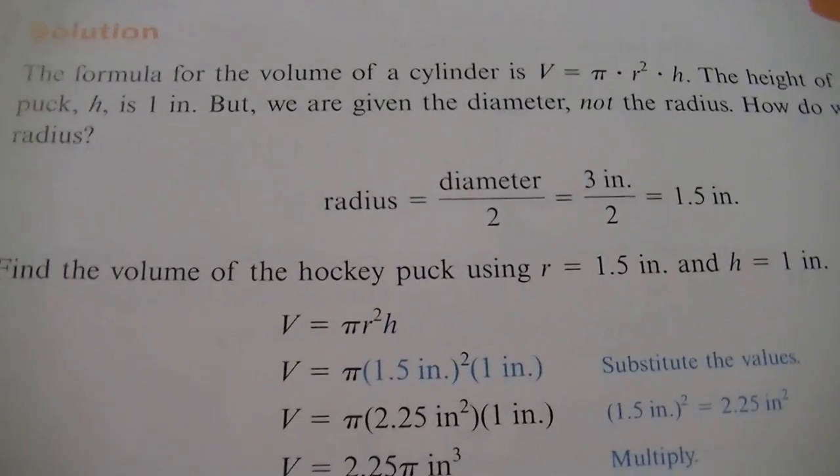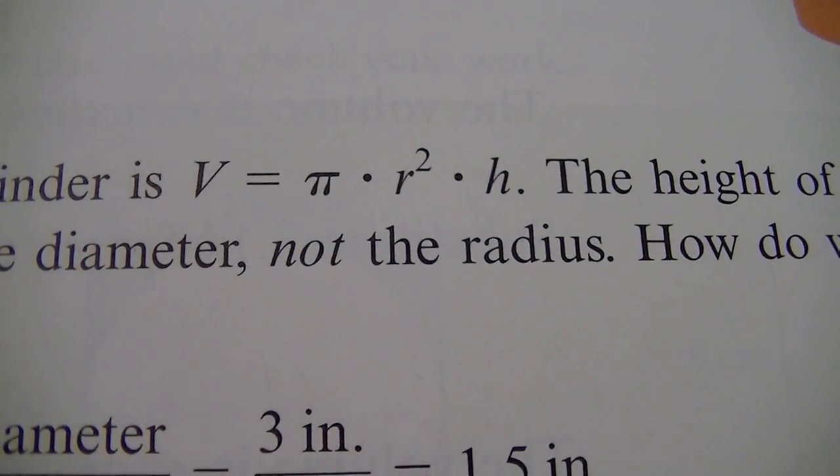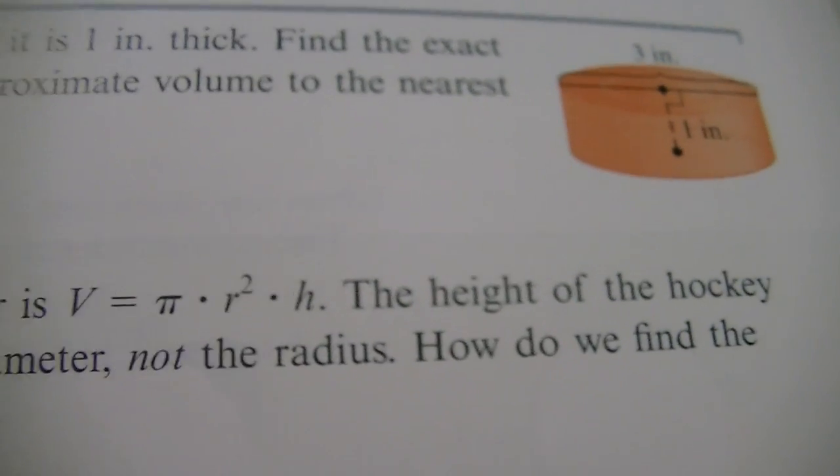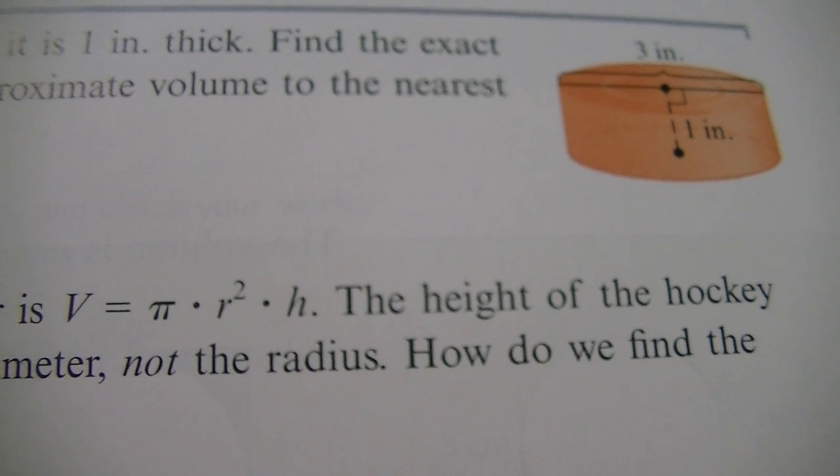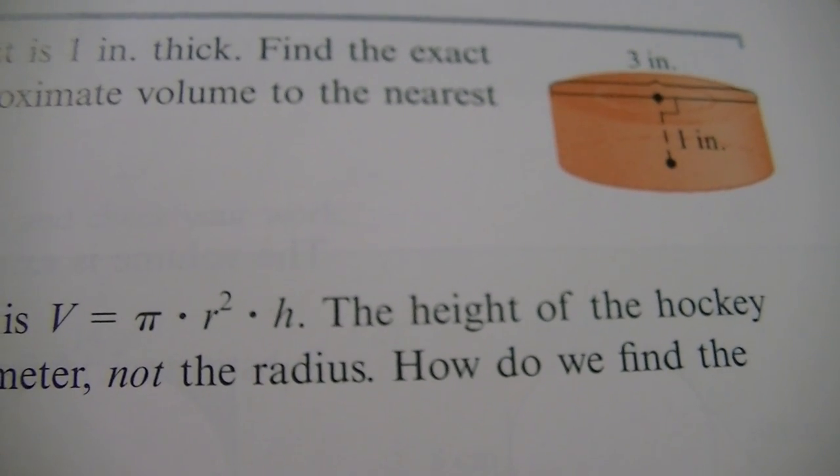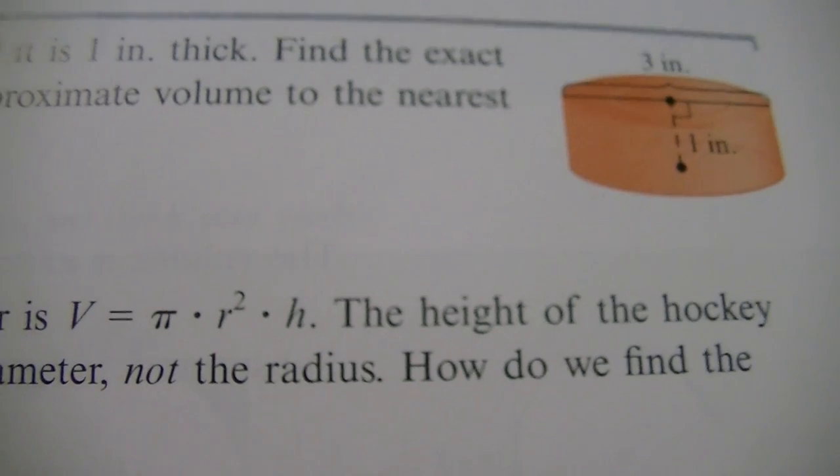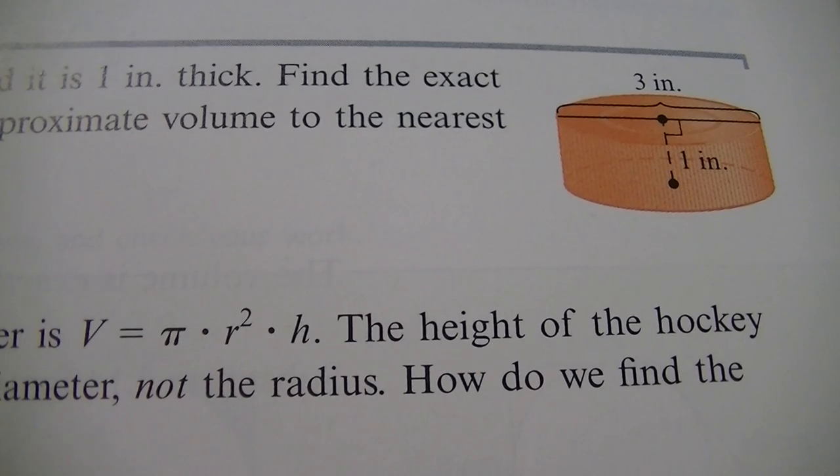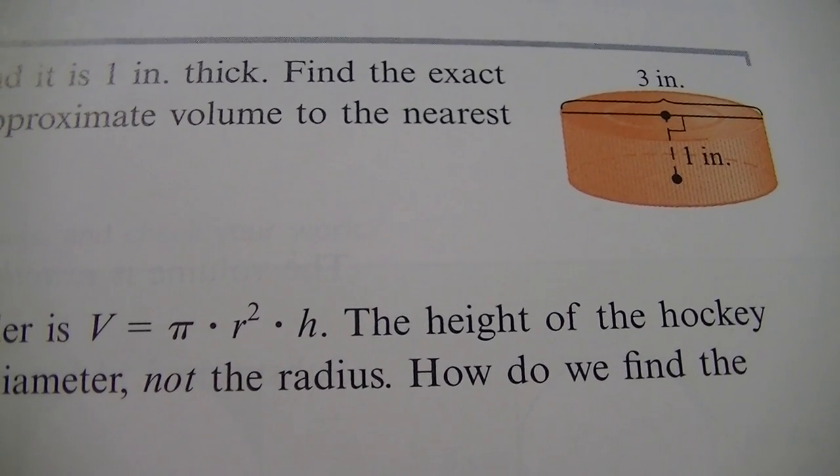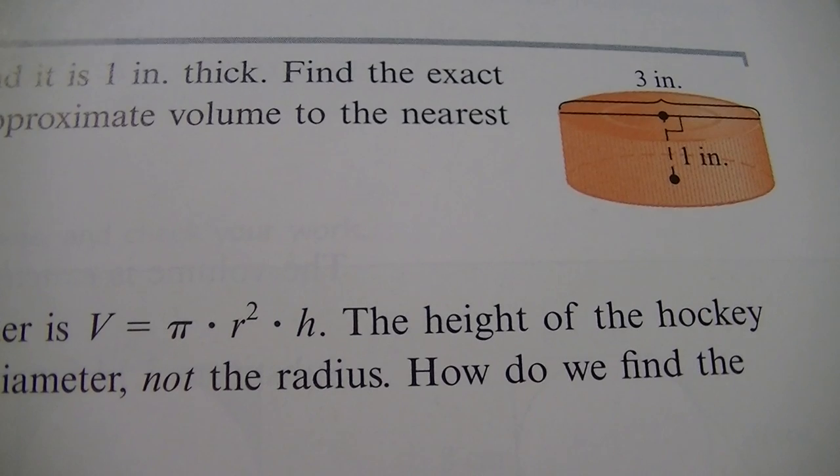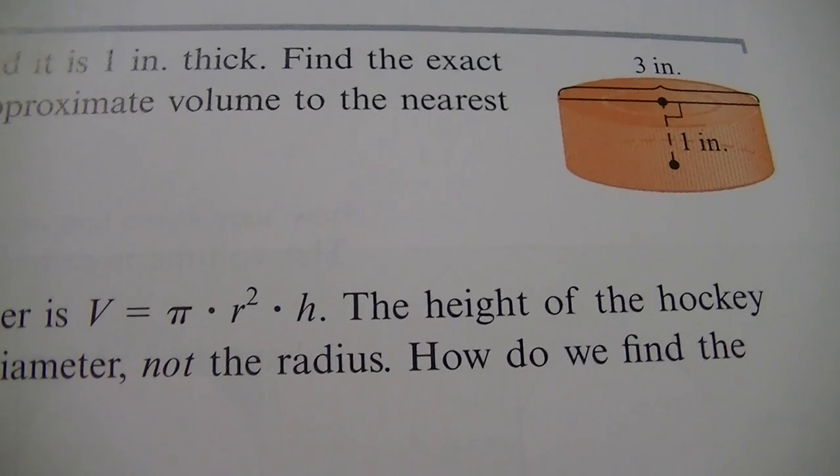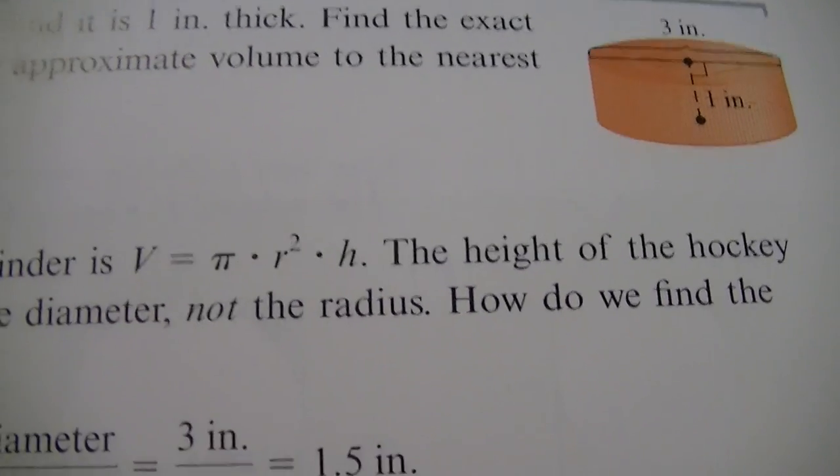It says the formula for the volume of a cylinder, let me zoom in on this, is pi times r squared times our height. Let's look at our picture again. What's our r squared? Now, our diameter is halfway across. They give us the whole way across. They say the whole way across is three inches. What's half of that? 1.5. That's going to be our r. We're going to square it. That means we're going to say 1.5 times 1.5. And then we're ultimately going to multiply it by the height. But in this case, our height is only one inch. So it's just going to remain one. So let's put this in.